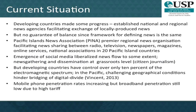So the global news flow status quo was maintained. The current situation has not improved much, even though developing countries have made some progress. The establishment of national and regional news agencies has facilitated the exchange of locally produced news. But there is no firm guarantee of balanced reporting since the framework for defining what is news is the same. Social media has liberalized news flow with citizen journalism to some extent, but developing countries have control over only 10% of the electromagnetic spectrum. In the Pacific, challenging geographical conditions hinder bridging the digital divide.